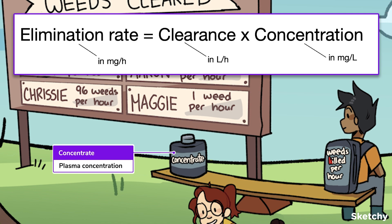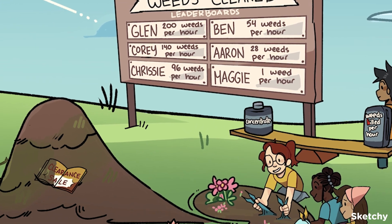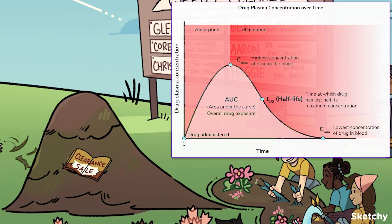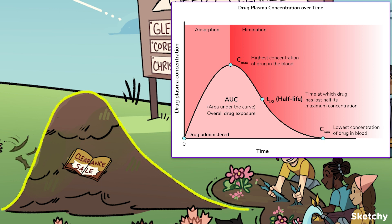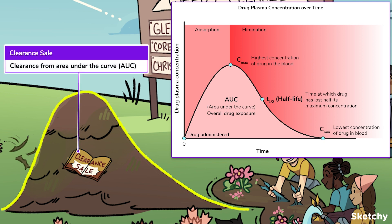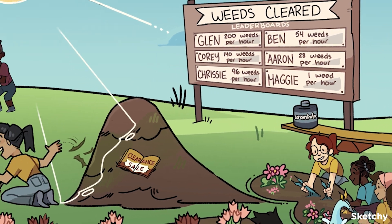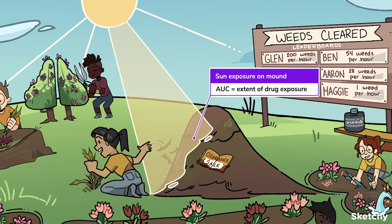We can also work out the clearance of a drug using the area under the curve, or AUC, where the graph is plasma concentration over time. Our mound of cleared weeds looks a lot like a plasma concentration curve! Let this hastily disposed clearance-sale magazine on our curved weed mound symbolize that clearance can be worked out using the area under the curve. The area under the curve tells us the extent of exposure to a drug, or the amount that has reached the circulation — it's exactly what it describes: the area underneath the plasma concentration curve, where the x-axis is time and the y-axis is plasma concentration.